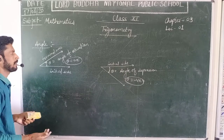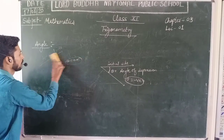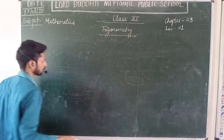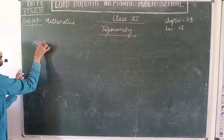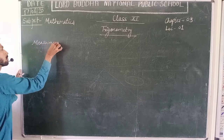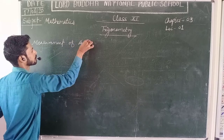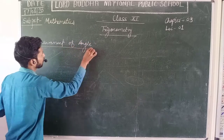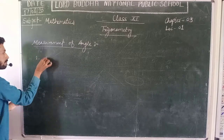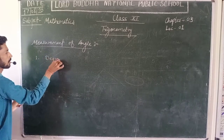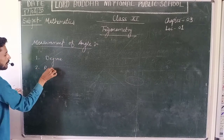But how can we measure the angle? The next topic is the Measurement of Angle. An angle can be measured in two forms: the first one is Degree, and the second one is Radian.